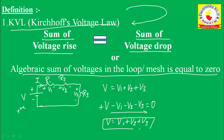The second definition states that the algebraic sum of voltages in a loop or mesh is equal to zero. Taking voltage rise as positive (+V) and voltage drops as negative: V − V1 − V2 − V3 = 0, which gives V = V1 + V2 + V3. Both definitions yield the same result. These are the two definitions of Kirchhoff's voltage law.